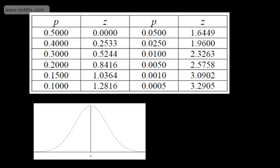In the last video, we started looking at working backwards. We were given a probability, and we had to find the corresponding value of z. We're going to continue that work in this video and look at tail probabilities.